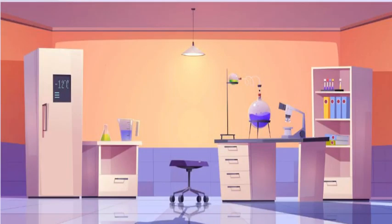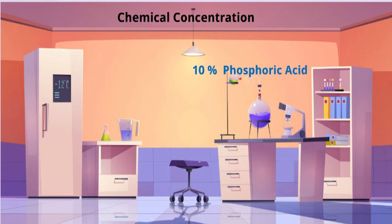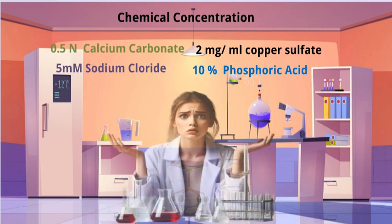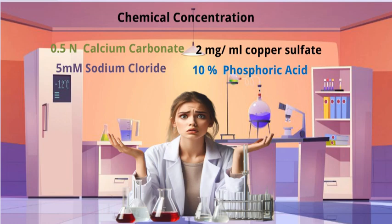Hello everyone, today we're diving into the world of chemical concentration. Suppose you are in a lab and need to prepare different chemicals and deal with different concentration units. For example, 10% of phosphoric acid or 2 mg per ml of copper sulfate, 5 mmol of sodium chloride or 0.5 N of calcium carbonate. Do those units sound tricky to you? No worries, I am here today to guide you on how to handle these different units.